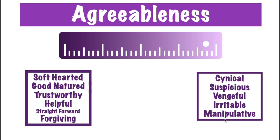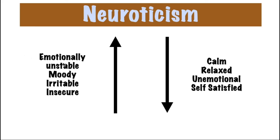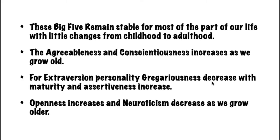The final dimension is Neuroticism, which determines how negative emotions are perceived and determines overall emotional stability. A person with a high score is emotionally unstable, moody, irritable, and insecure. A low score on Neuroticism means the person is calm, relaxed, unemotional, and self-satisfied.